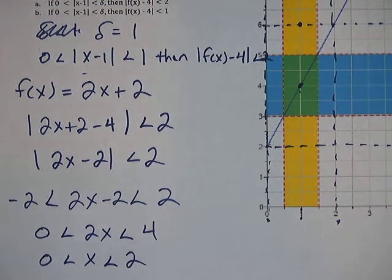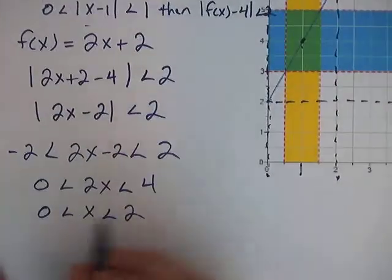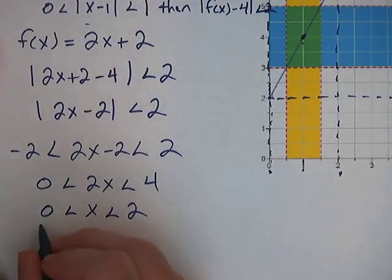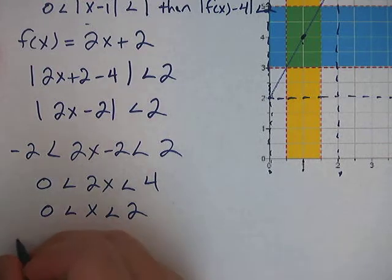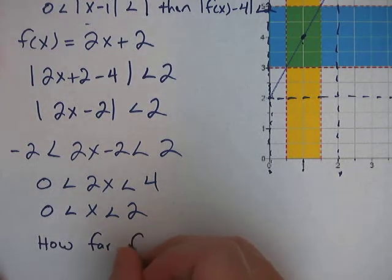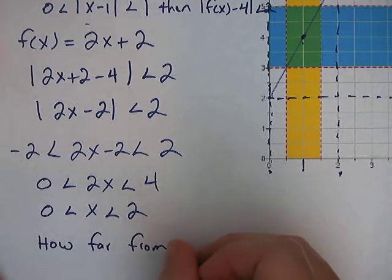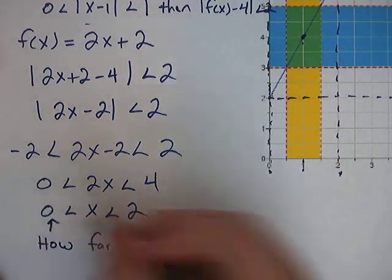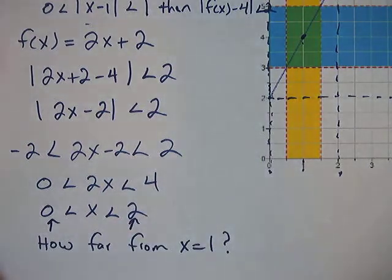So we know that x is equal to 1. So the question, once we solve this equation, is how far from x equals 1 are these numbers right here? Well, like 0 is how far away from 1?